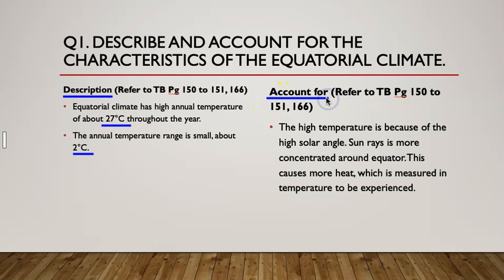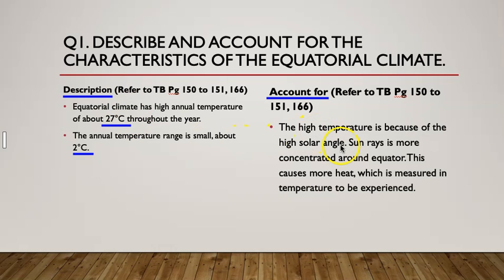Next, you must follow with 'account for', which is like explaining — giving reasons for the temperature that you have described. After you have described the answers, whether it's high temperature with the data or temperature range, you must give the explanation right away. Do not give the explanation in another paragraph; this explanation must follow right after your description. For example: equatorial temperature has a high temperature of about 27 degrees Celsius. This is because of the high solar angle — sun rays are more concentrated around the equator, causing more heat to be experienced in this zone.